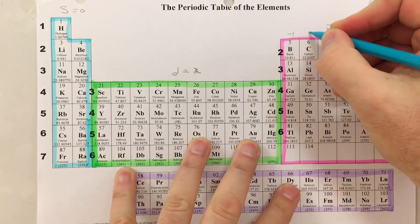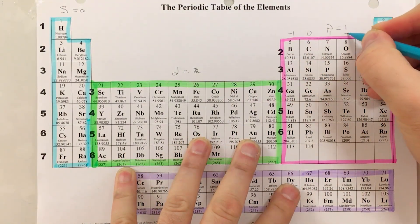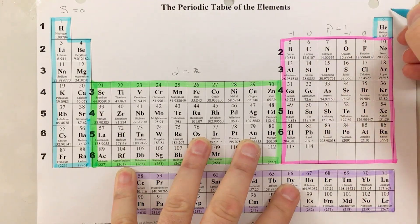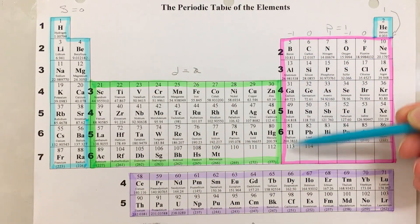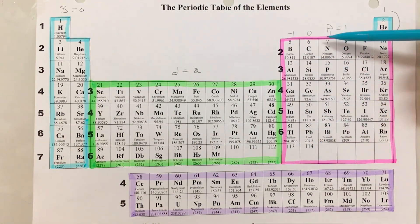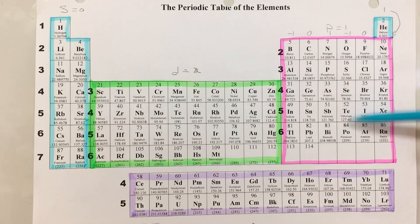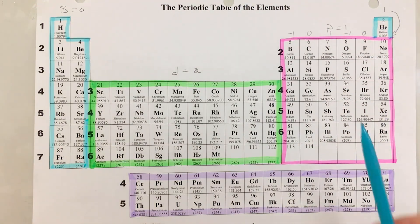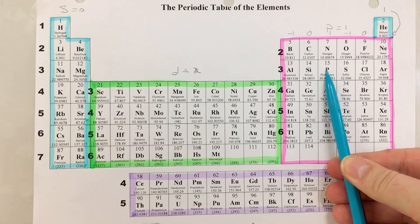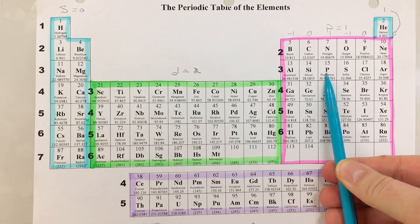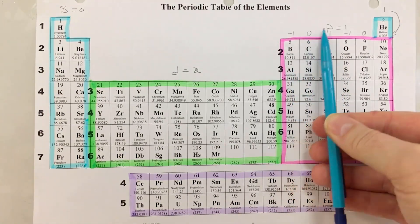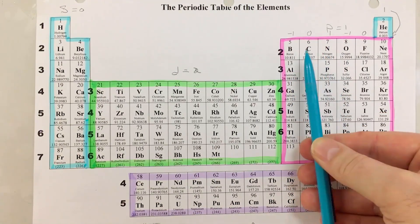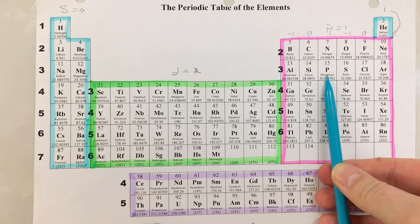On the periodic table itself, for the p block we can write: minus one, zero, one, minus one, zero, one across the six columns. Make sure this applies only to the p block. Everything in the first column has a third quantum number of minus one, the next column is zero, the next is one, and so on. So for phosphorus: first quantum number is 3, second quantum number is 1, and looking at its column, the third quantum number is 1.